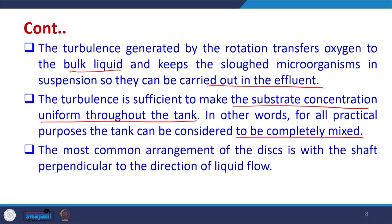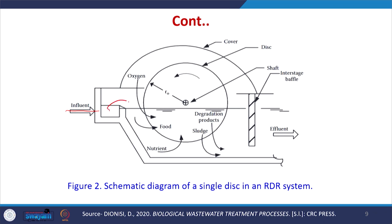The most common arrangement of the disc is with the shaft perpendicular to the direction of liquid flow. The influent comes in and the disc is perpendicular to the flow direction. There can be 10 to 15 or more continuous parallel discs, and there will be a large number of discs mounted on the same shaft.